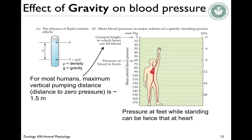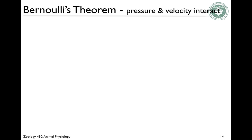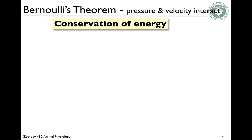Measuring blood pressure at the level of the heart matters because as you go higher and higher, you'll really start to see the effects of gravity on blood pressure — fluids are heavy. For most humans, the maximum distance the heart can pump is about 1.5 meters; after that, pressure drops until it gets to zero. Conversely, the pressure at the feet while standing can be twice as high as that of the heart. This is a result of Bernoulli's theorem, or conservation of energy.